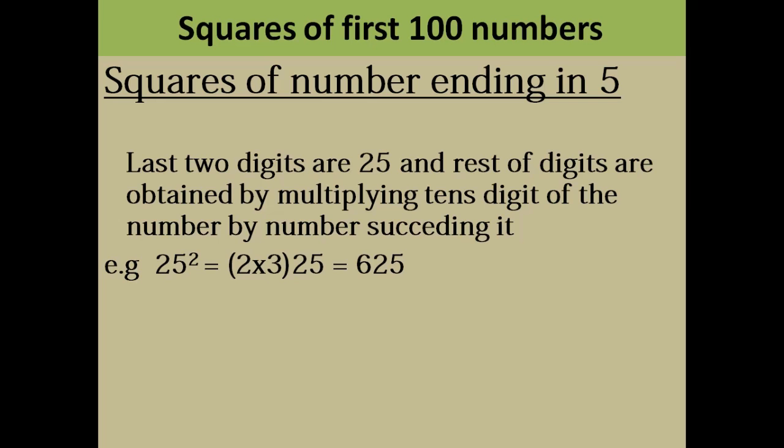The last two digits of 25 you have written as it is. The rest of the digits: you will take the tens part of 25, that is 2, and you will multiply it by the number succeeding it, that is 3. 2 is the number at tens part, then you multiply it by the number succeeding it, that is 3.